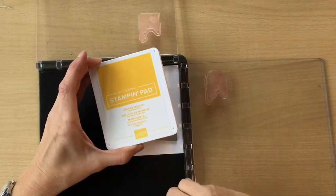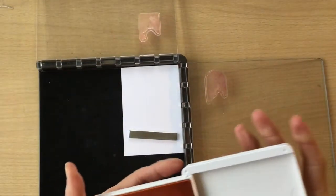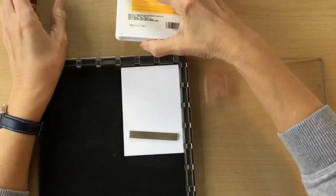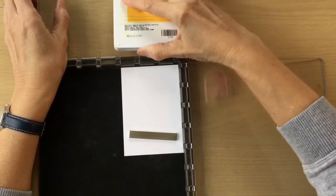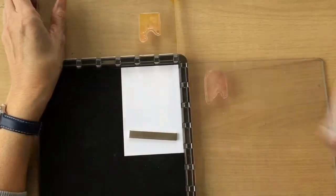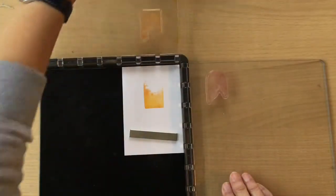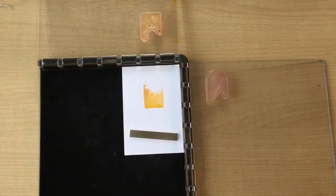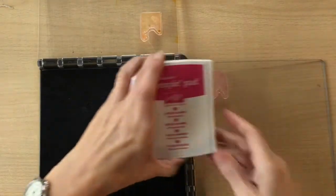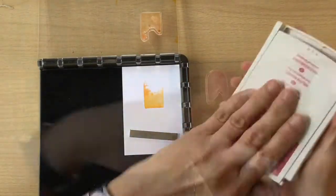I'm going to use Mango Melody for the bottom of the lolly, ink that up and stamp it on. There we go. And then the Melon Mambo for the top.